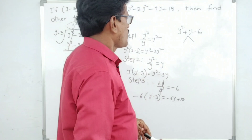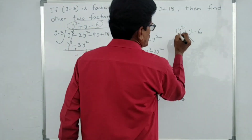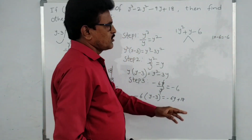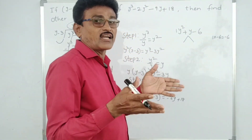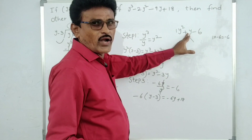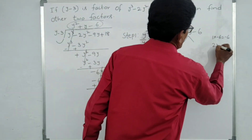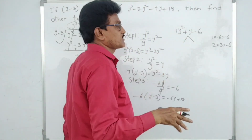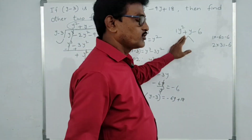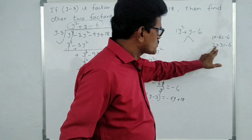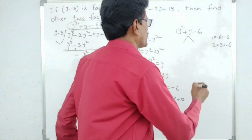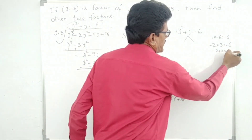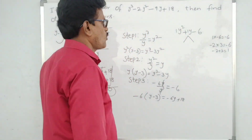To factor y² plus y minus 6: the y² coefficient is 1, and the constant term is minus 6. Multiply: 1 times minus 6 equals minus 6. We need two numbers that multiply to minus 6 and add to 1 (the y coefficient). Two times three is six, so using minus 2 and plus 3: minus 2 times plus 3 equals minus 6, and minus 2 plus 3 equals plus 1. That works.